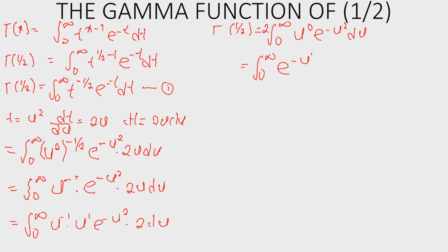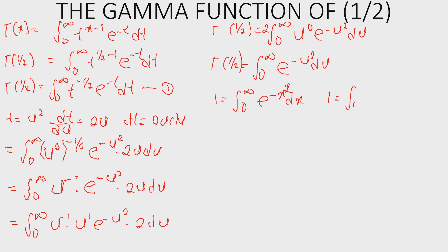To further integrate this, we need to make some assumptions. Let I equal the integral from 0 to infinity of e raised to the power of minus x squared, dx. The next assumption is to let I also equal the integral from 0 to infinity of e raised to the power of minus y squared, dy.